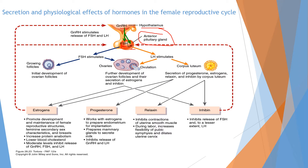FSH stimulates the initial development of the ovarian follicle, meaning it is involved in follicle maturation — from the primordial follicle it is converted into a primary follicle, from primary to secondary, and then secondary to a finally mature Graafian follicle.